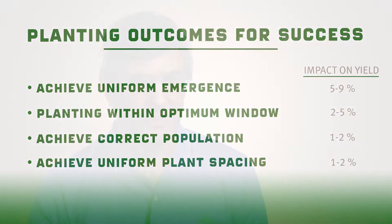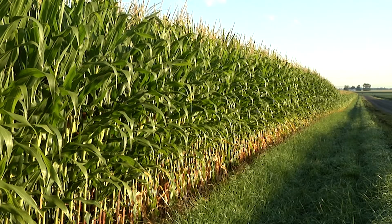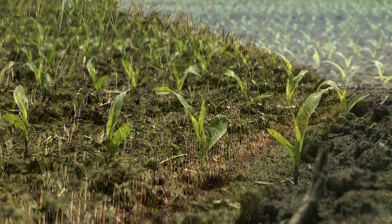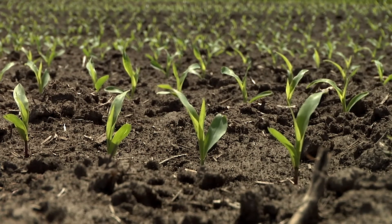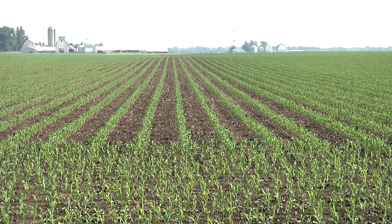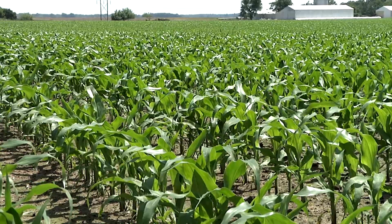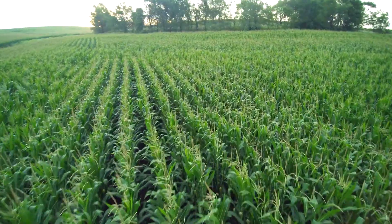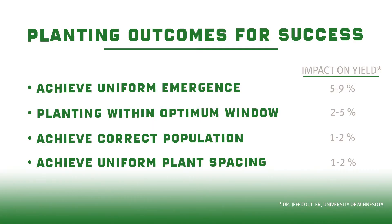The last key planting outcome is achieving uniform plant spacing. This gets a lot of attention because growers really like to have picket fence stands — every plant uniformly spaced and the same size. Uniform plant spacing is important, but the main thing is to avoid skips. If we have a few doubles or a few misplaced plants, the impact there is relatively small. Those are some key factors to look at as you go to the field this year, with uniform timing of emergence being number one.